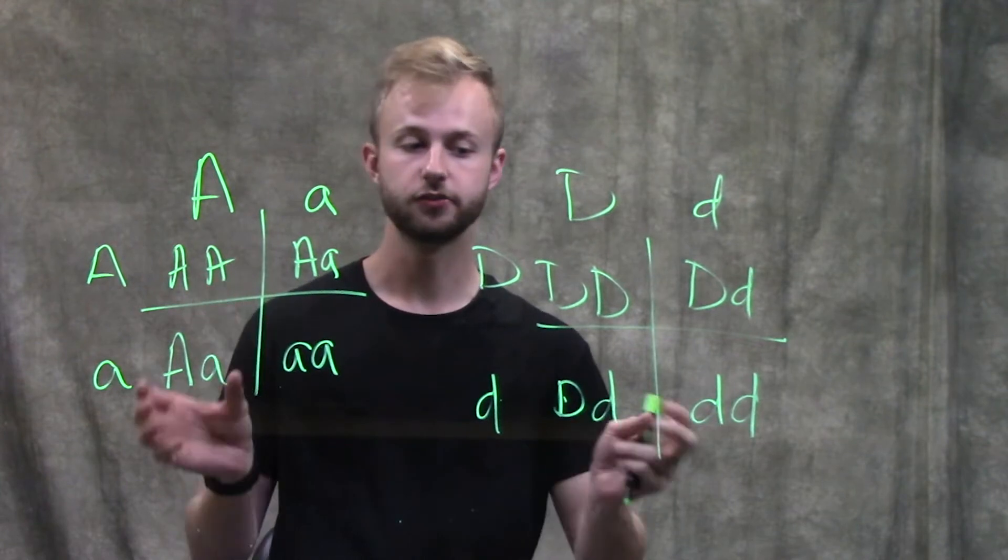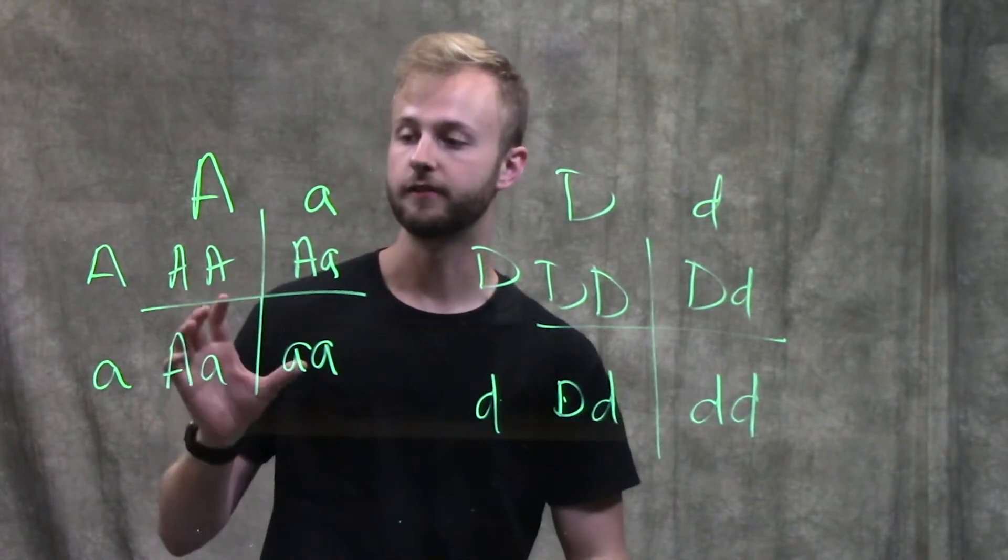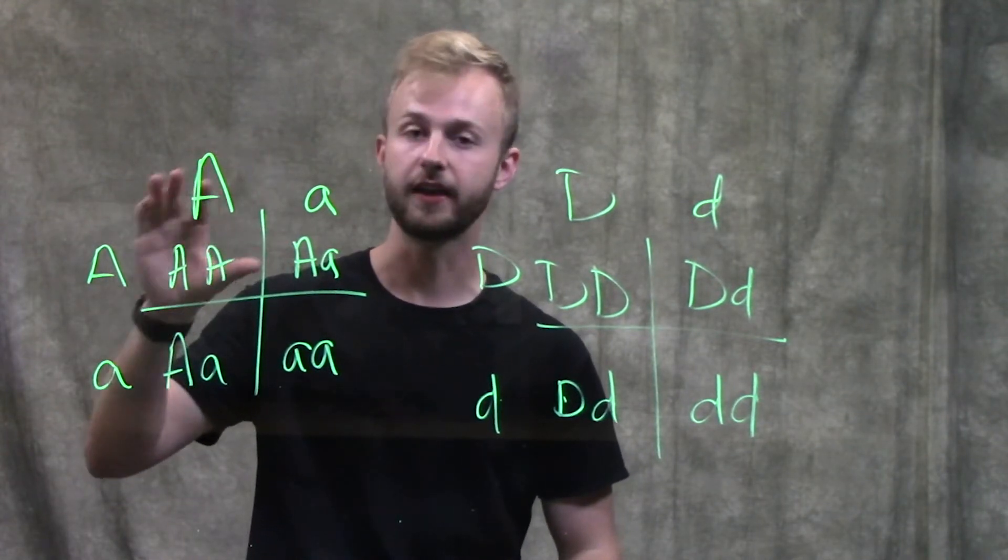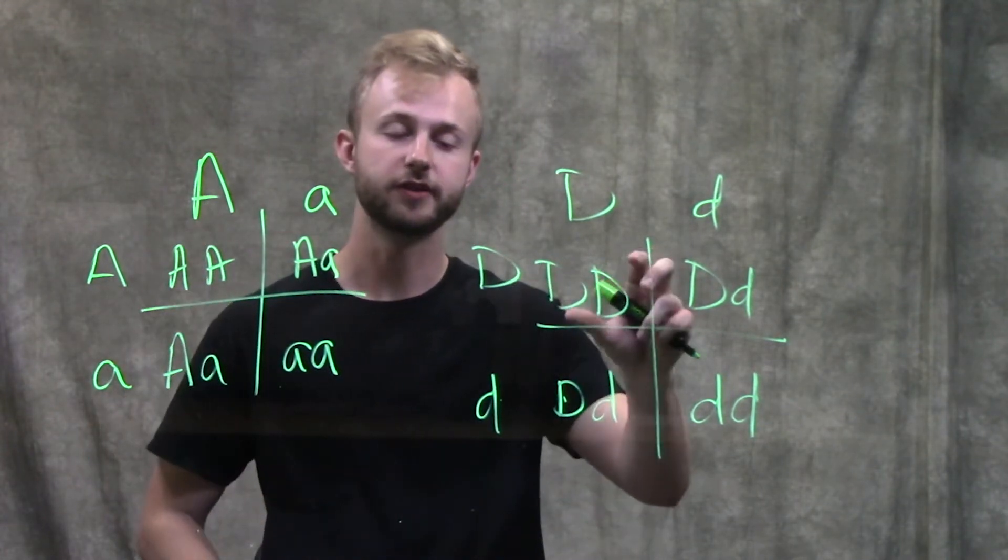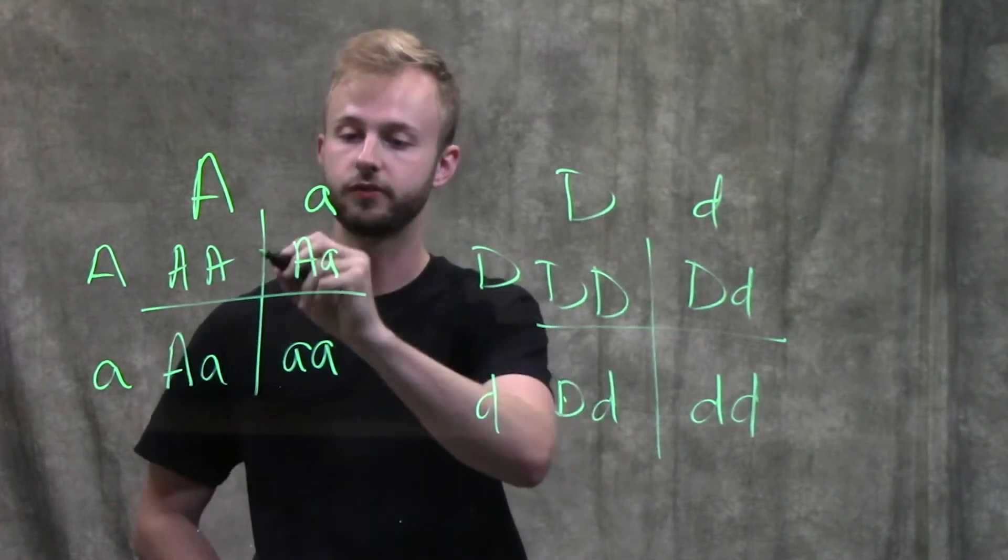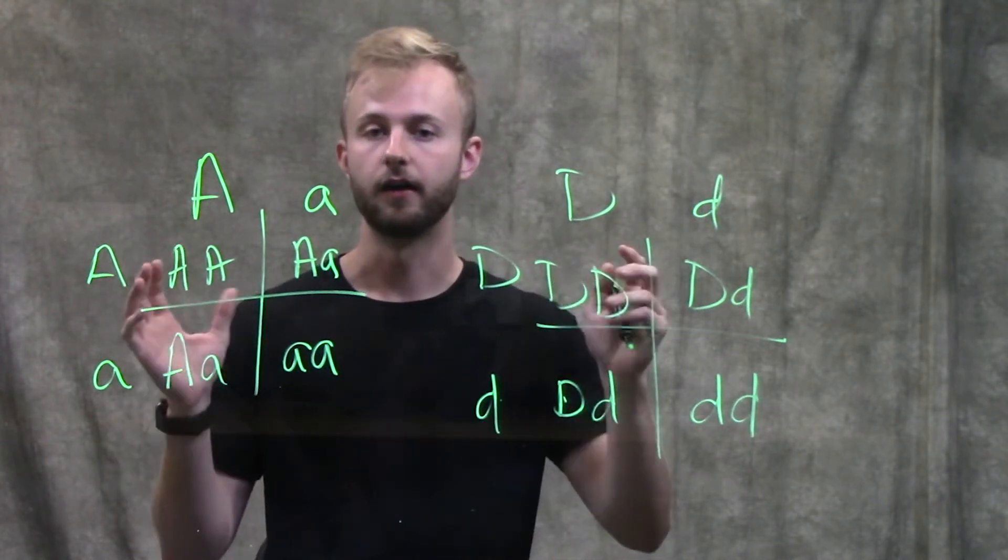For example, since these are two separate genes, we can look at the probability that an individual is going to have the genotype big A, big A, and the genotype big D, big D. To do that, we're going to multiply the probabilities of getting these genotypes together.